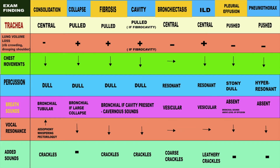We are going to compare the examination findings of various lung conditions. The trachea is central in a consolidation, pulled to the same side in a collapse, and also pulled to the same side in fibrosis. If a cavity is associated with fibrosis, as in tuberculosis, it is central. In bronchiectasis it is central, in interstitial lung disease it is pushed to the opposite side, and in pleural effusion and pneumothorax it is also pushed to the opposite side.